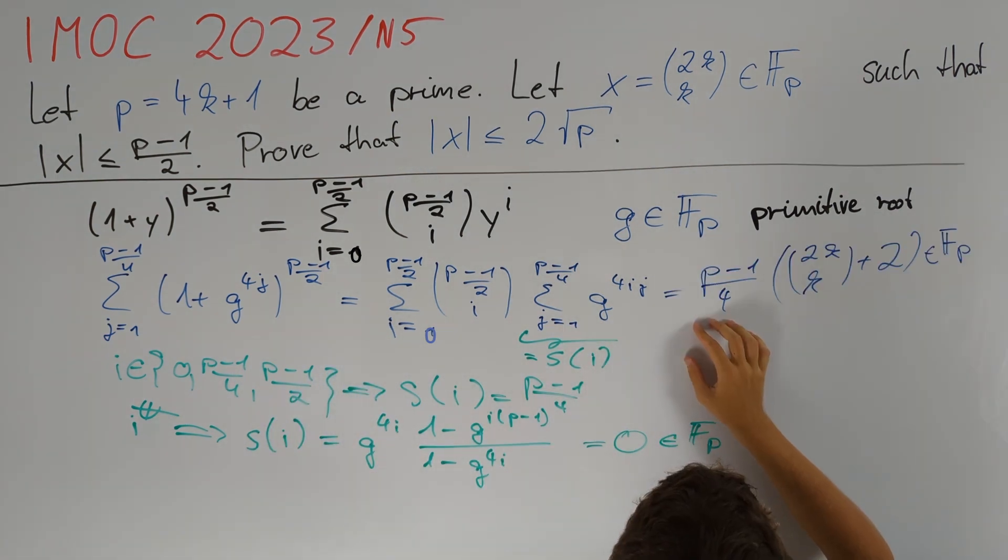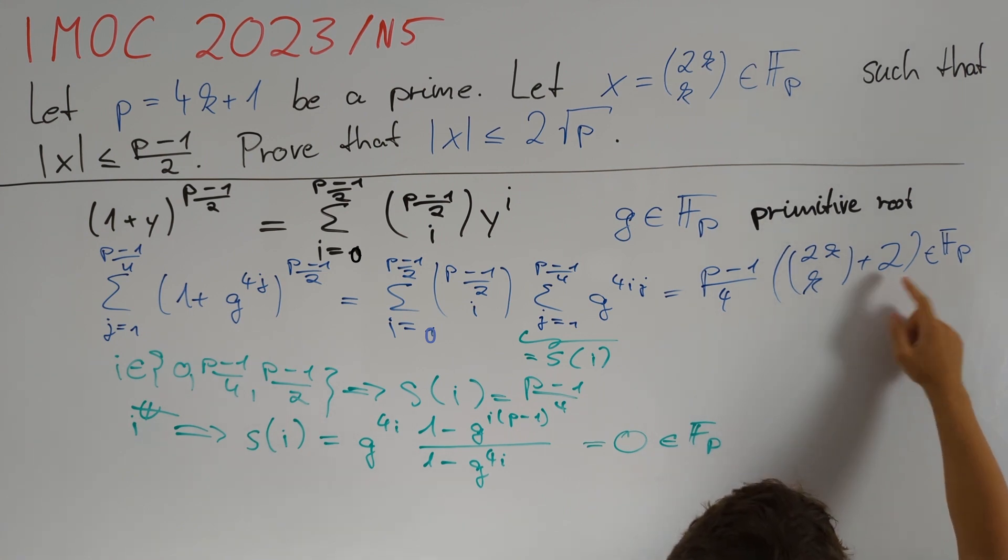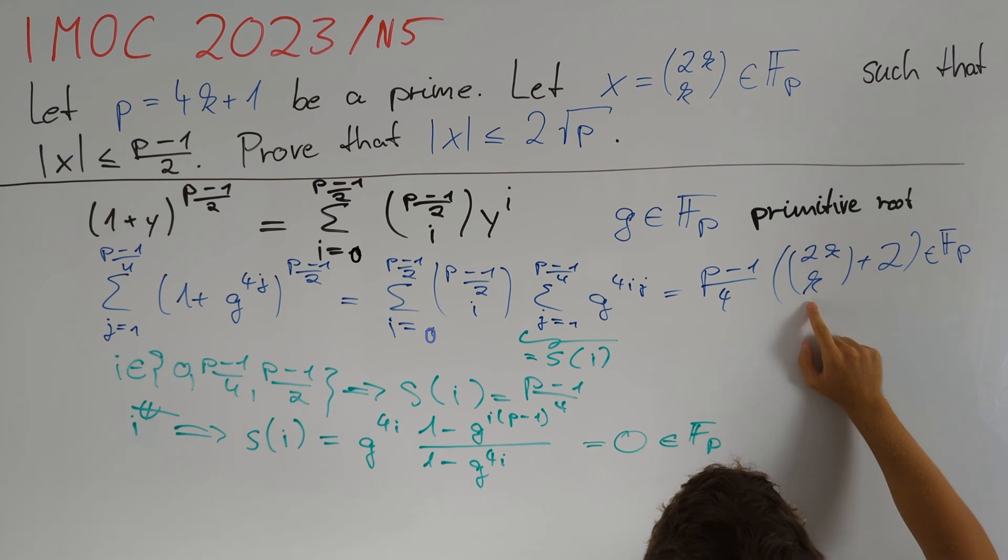Hence we are left with (p-1)/4 times (2k choose k) plus 2 in Fp. And now we can see that we can rearrange this for 2k choose k.